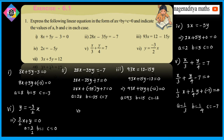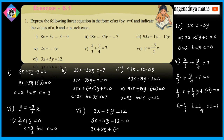Seventh problem: 3x plus 5y is equal to 12. Moving 12 to the left hand side gives 3x plus 5y minus 12 is equal to 0, written as 3x plus 5y plus (minus 12) is equal to 0. Therefore A is equal to 3, B is equal to 5, and C is equal to minus 12.